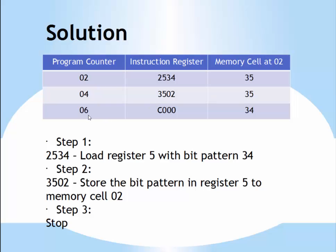When we move on to the next instruction, the second instruction executes: store the bit pattern in register 5 to memory cell 02. Something has now changed in memory cell 02. What's in register 5? We loaded it in the previous step — 34. So we are taking 34 and storing it to memory cell 02. The next instruction is C000, at which point 3502 has executed, memory cell 02 now has 34, program counter has moved beyond 05 to 06, and the machine halts.